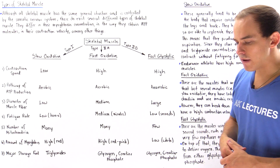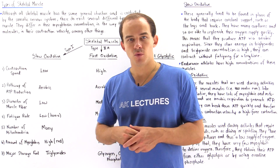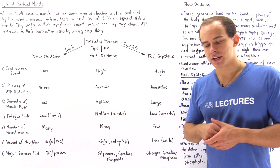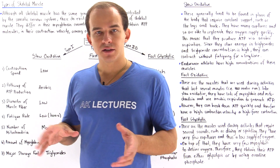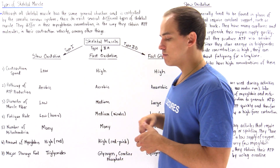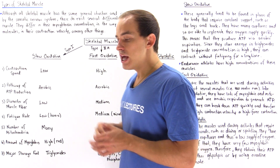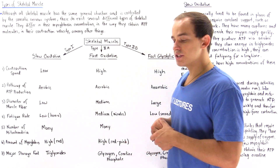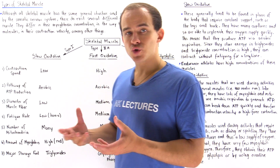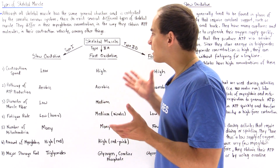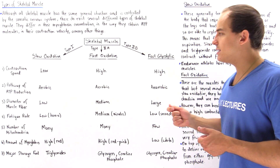Skeletal muscle is a type of muscle found in the human body responsible for voluntary movement, such as walking, running, riding a bicycle, swimming, and so forth. There are three different types of skeletal muscles. And although all these different types have their differences, they are all controlled by the somatic nervous system and consist of the same general structure. What exactly are these muscles, their differences and similarities, and what is their function?